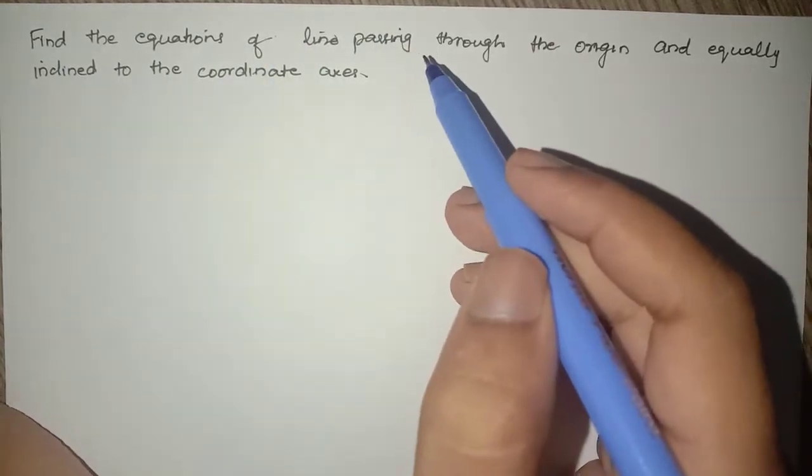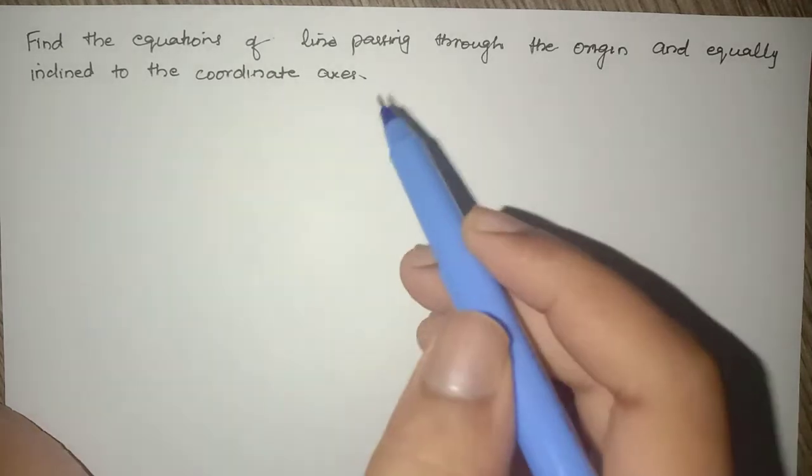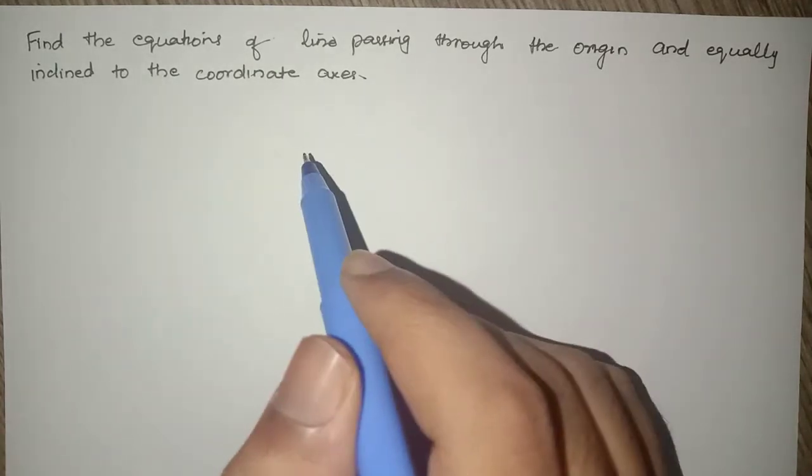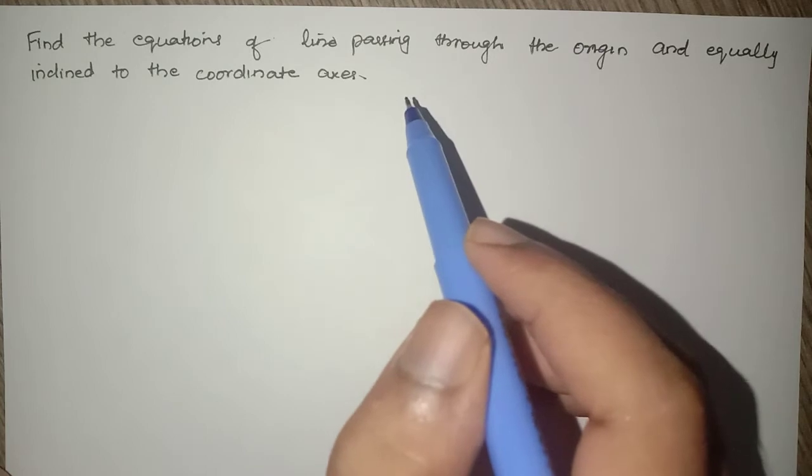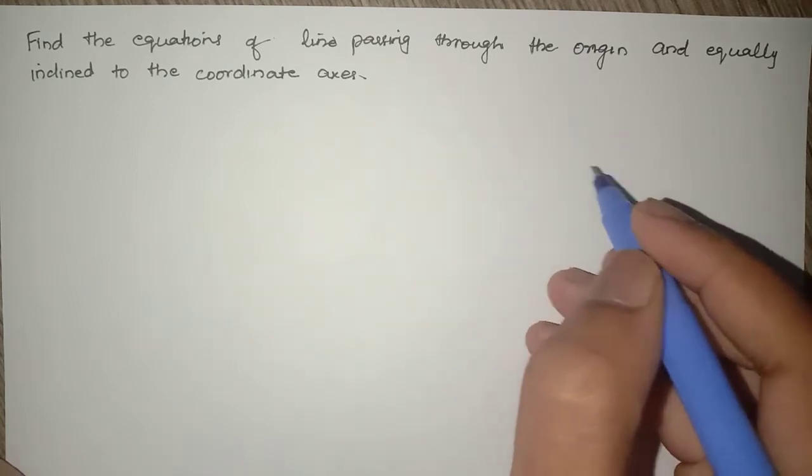Find the equations of line passing through the origin and equally inclined to the coordinate axes. We need to make an equation which is passing through the origin.